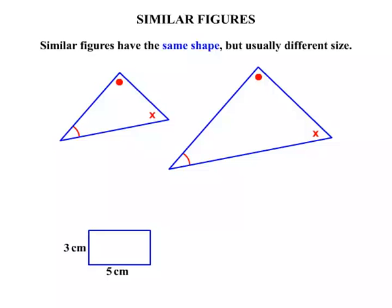What about this rectangle? The sides are 5cm and 3cm. Well this larger rectangle would also be similar. The sides are 10cm and 6cm. They're in proportion. Those sides have simply been doubled.